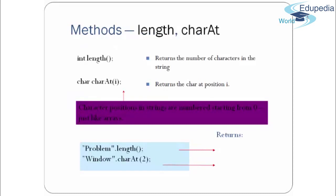Now let's look at some methods of the string class. The first is length() — it returns the number of characters in a string as an int. The second is charAt(i) — it returns the character at index i. Character positions start from 0, just like arrays. So charAt(1) gives you the second character. For example, "problem".length() returns 7, and charAt(2) gives you 'n'.